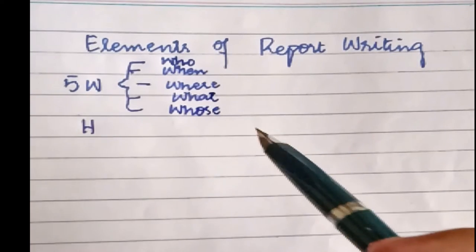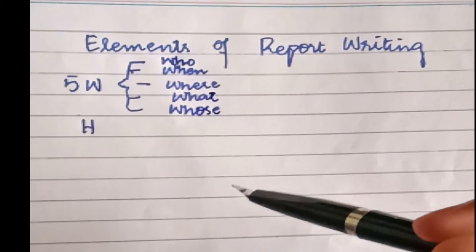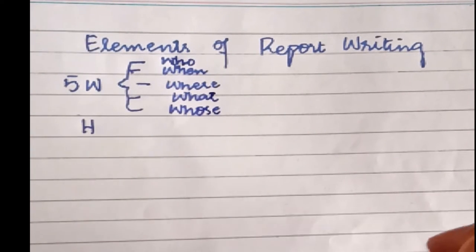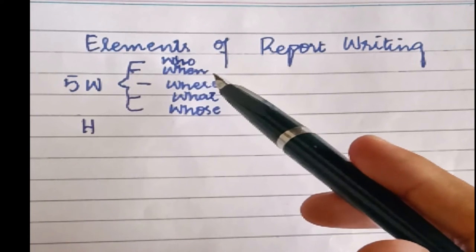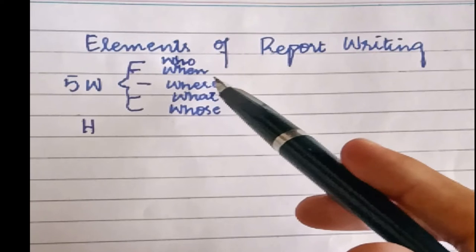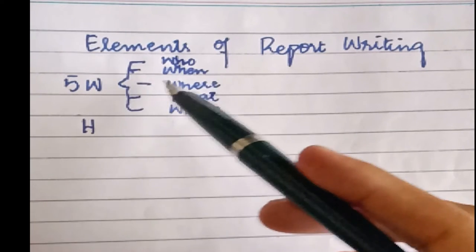First of all, in 5Ws - who. It means that if you are making a report about a person, then you will mention which person. When - we will use this in report writing to tell what time. This is when.